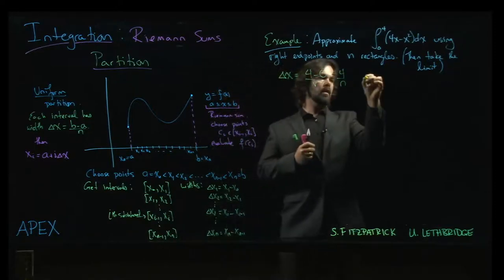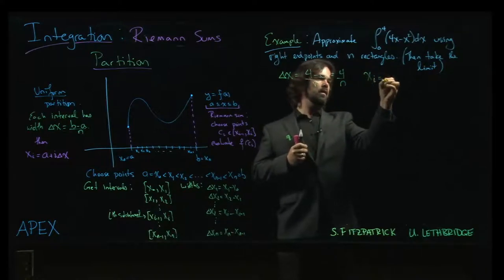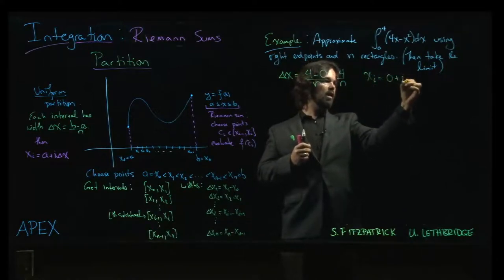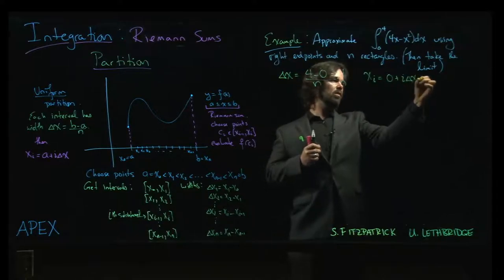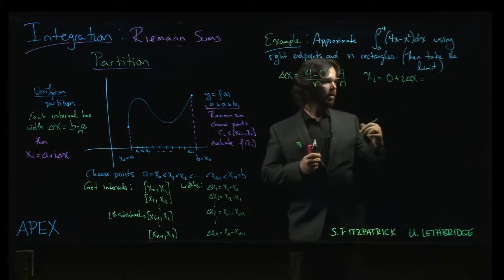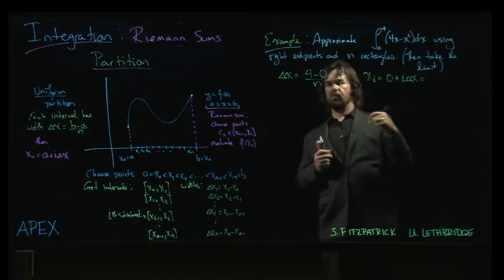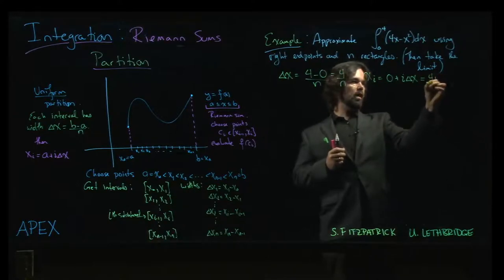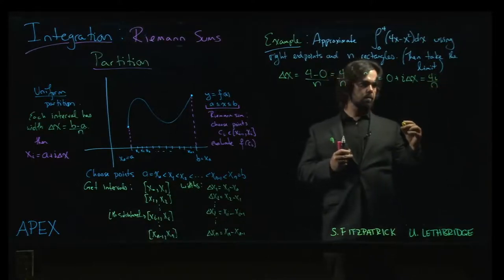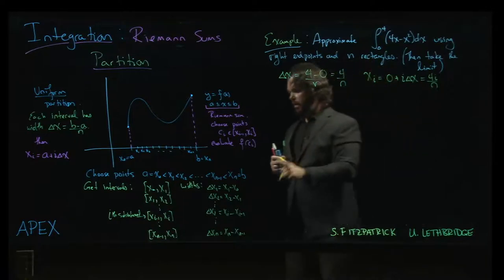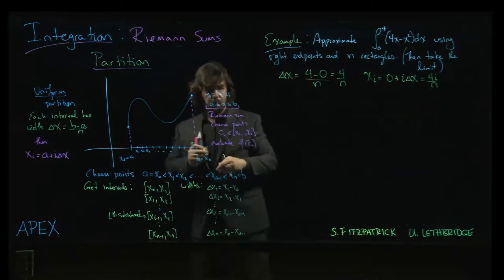And xi will be the left endpoint, 0, plus i times delta x, which in this case is just i times 4 over n, so it will look like this, 4i over n. Remember those are the right endpoints of the intervals in my partition.